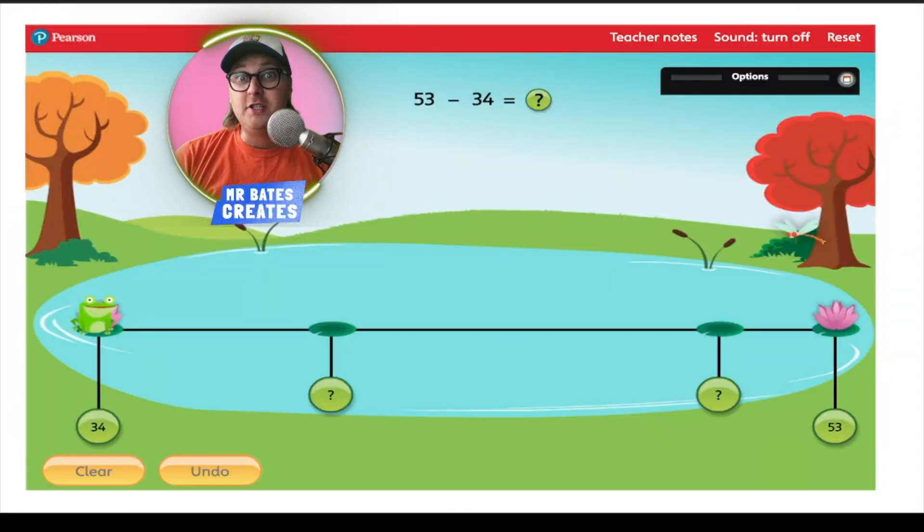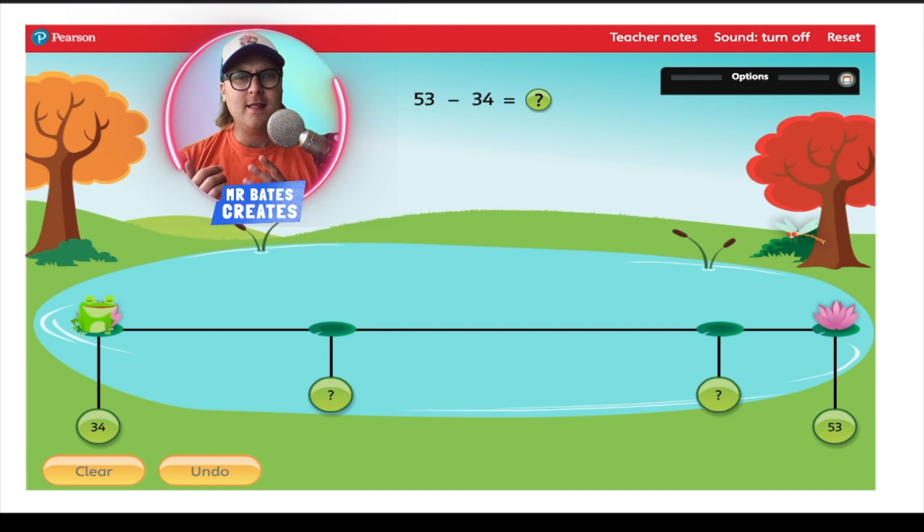When we take away a two digit number from a two digit number, it can be a little bit challenging to start with and it certainly can look a little bit intimidating, which means a bit scary. But looking at this sum here, 53 take away 34, let's see if we can break it down and work out how we can add up to find out what the take away sum would be.